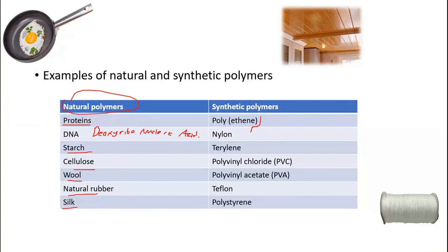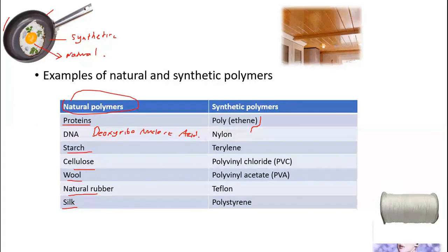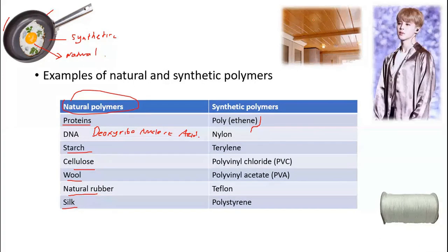The proteins in an egg are a natural polymer. PVC — polyvinyl chloride — is a synthetic polymer. This picture shows PVC, which looks like wood but is actually a synthetic polymer.